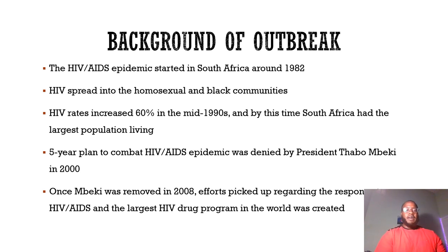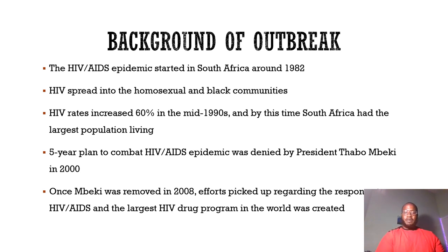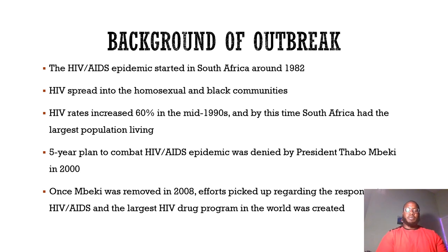Regarding a five-year plan to combat HIV and AIDS: the AIDS epidemic was denied by President Thabo Mbeki in 2000. Once Mbeki was removed in 2008, efforts to respond to HIV and AIDS picked up significantly. As a result, the largest HIV drug program in the world was created.